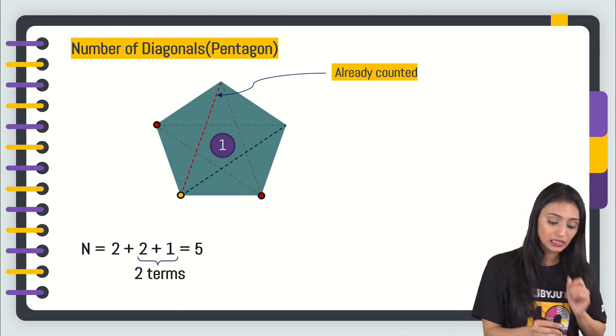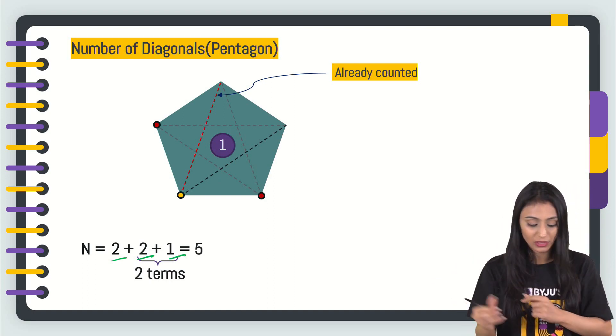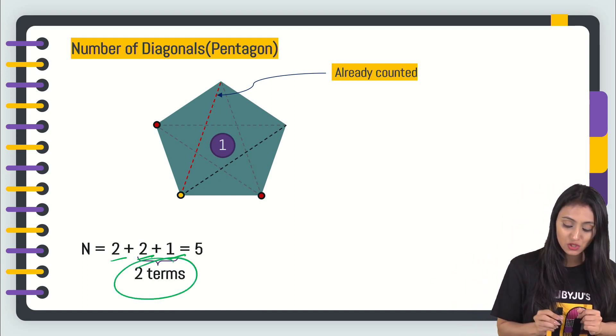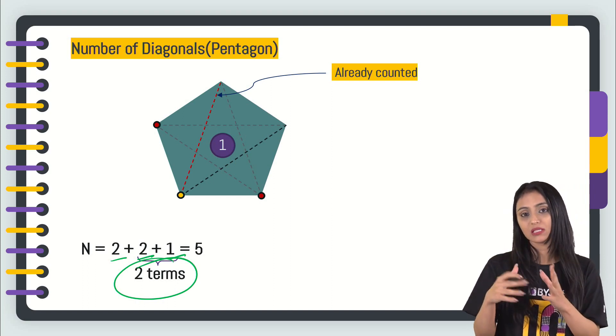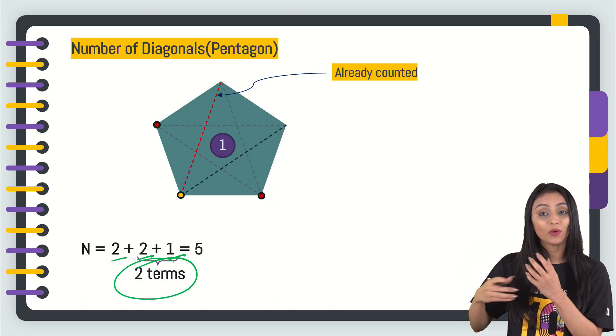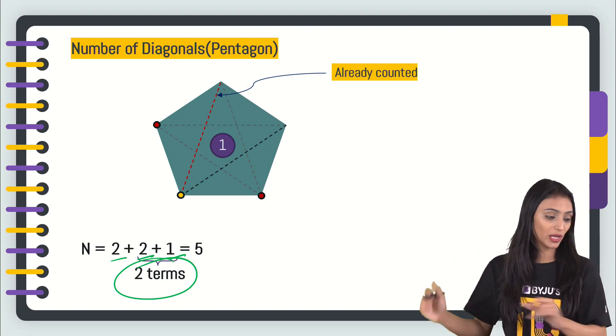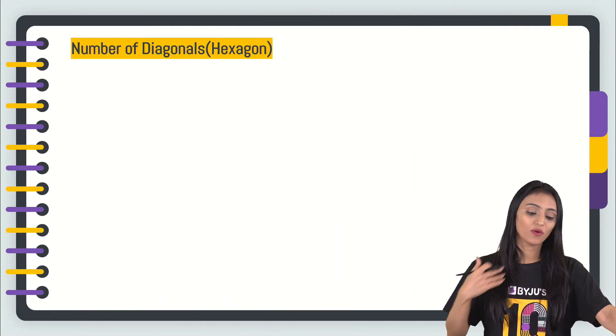So here we could see a pattern. Earlier there were two diagonals, then again two and then one. The number reduces after that. So here we are including these as two terms. Just keep this in mind because later on, once we talk about different polygons, this pattern over here is going to help us. Let's move ahead.